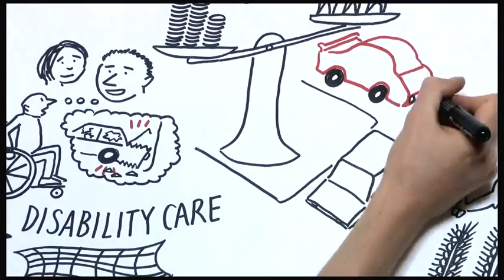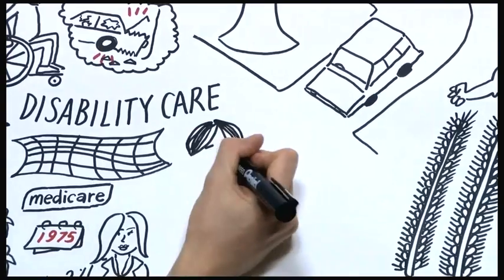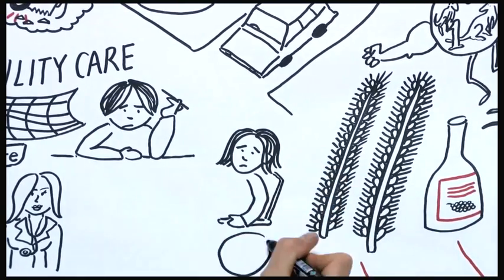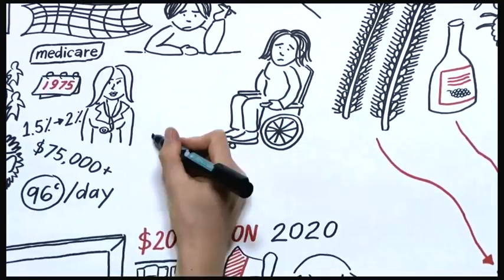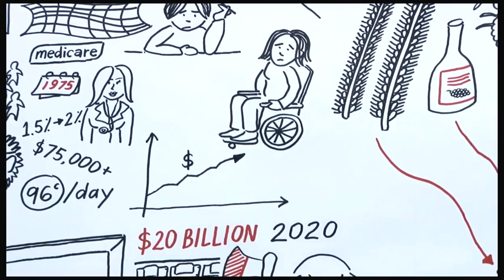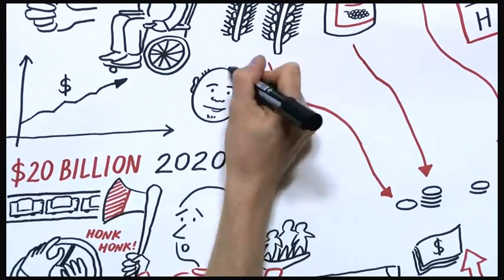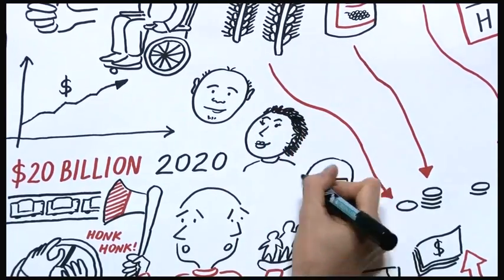Do we want to live in the kind of country that ignores gridlock roads, that turns a blind eye to students struggling to keep up, that leaves people living with a disability on their own? Or do we want to live in a country with a strong and growing economy, where everyone gets a fair go, and where we're investing today for an even brighter future?